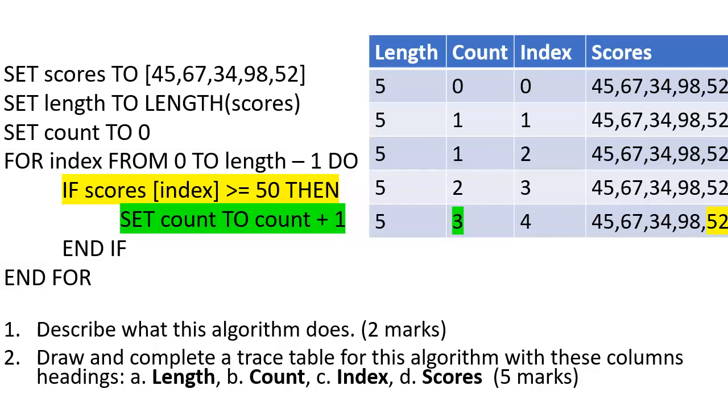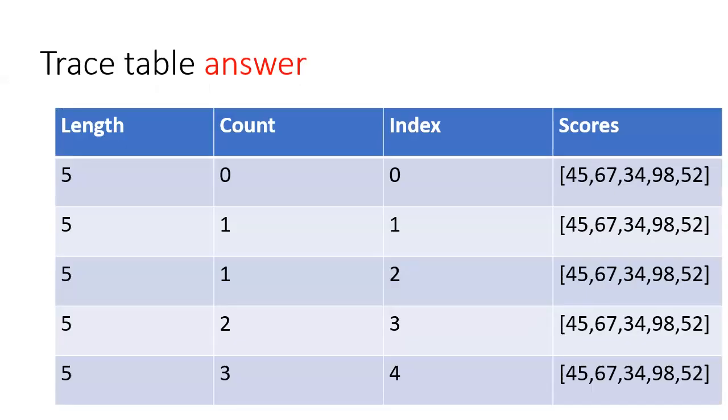So looking at that, we can see what that is doing. If we look at that here as our answer, you can see that length has stayed the same because it's always been five. Scores have stayed the same because the elements of that array haven't changed. And index is incremented from zero through to four, so I've looked at all the values there, and count that are greater than or equal to 50.